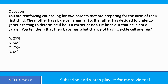You are reinforcing counseling for two parents preparing for the birth of their first child. The mother has sickle cell anemia, and the father has decided to undergo genetic testing to determine if he is a carrier. He finds out that he is not a carrier. You tell them that their baby has what chance of having sickle cell anemia? A. 25%. B. 50%. C. 75%. D. 0%.